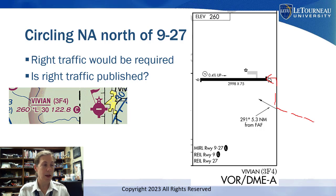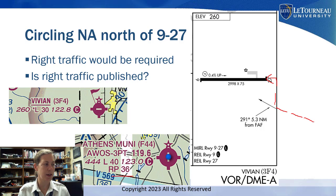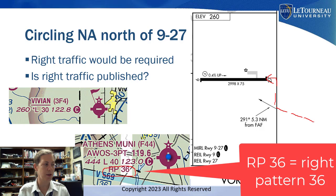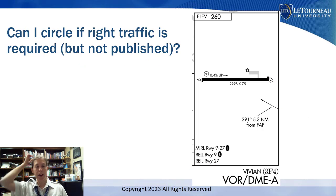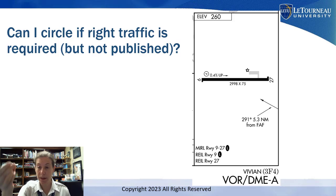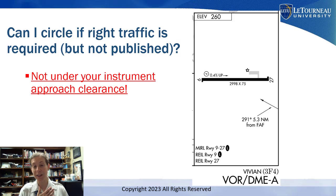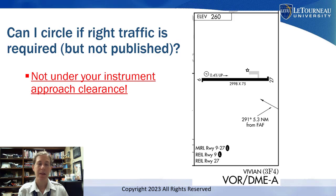If right traffic were published, we could see that on a VFR sectional. Here's an example at Athens — you can see they have right pattern clearly published to runway 36. So the deal is: if right traffic is required — like at Vivian for runway 9 — and it's not published, I cannot circle to land under my instrument approach clearance. That's a problem.